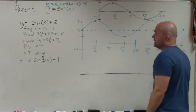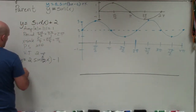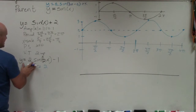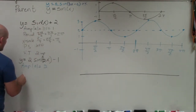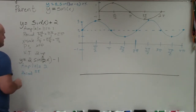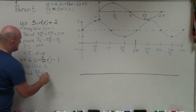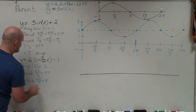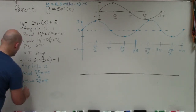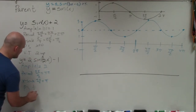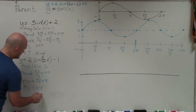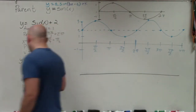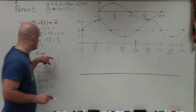Now let's go to the next one. This one has amplitude of 2. My period is 2π divided by b, where b is 1/2, so the period is 4π. My x-scale is period divided by 4, which gives us π. My phase shift is still x equals 0, so we're still starting at 0. And my vertical transformation k is going to be negative 1, which means we're shifting down.